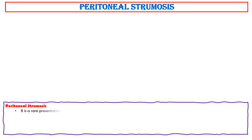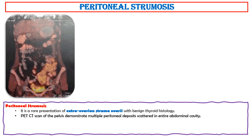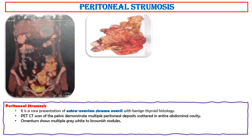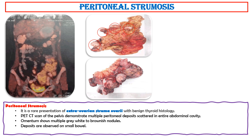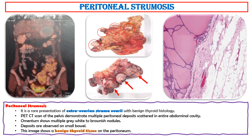Peritoneal stromatosis is a representation of extra-ovarian struma ovaryi with benign thyroid histology. PET-CT scan demonstrates multiple peritoneal deposits scattered throughout the entire abdominal cavity. The omentum shows multiple gray-white to brownish nodules. Deposits are observed on low power, and this image shows benign thyroid tissue on the peritoneum.